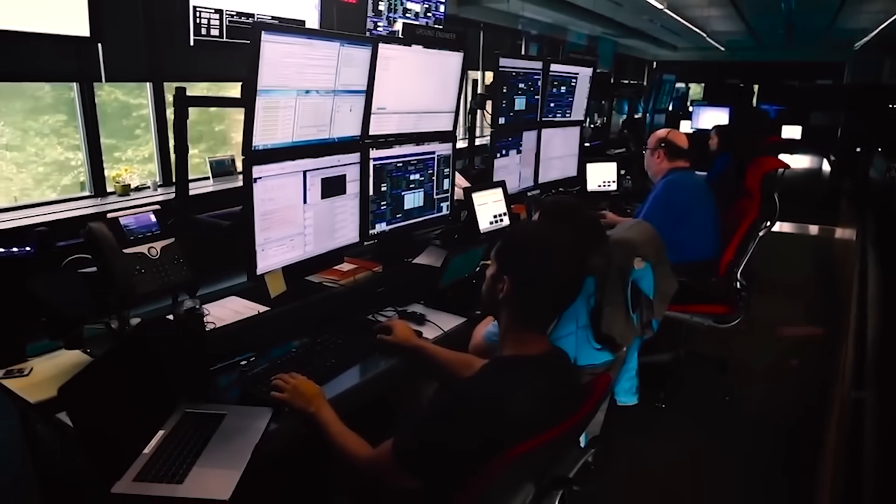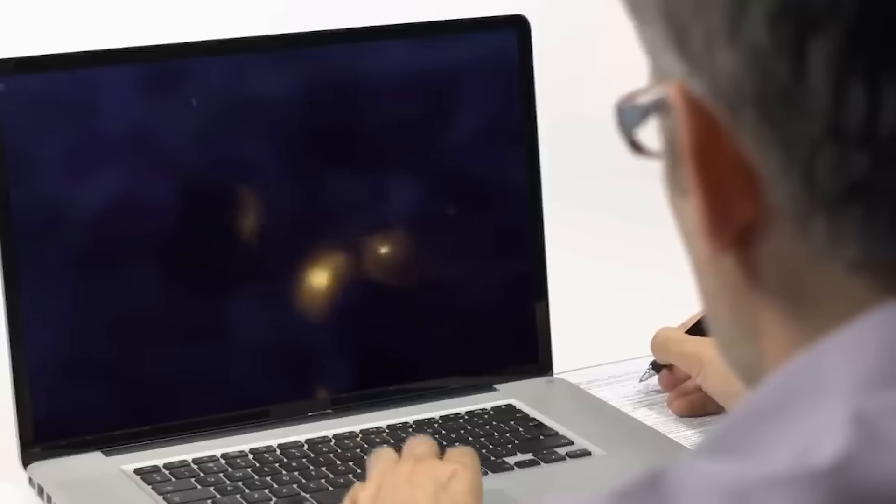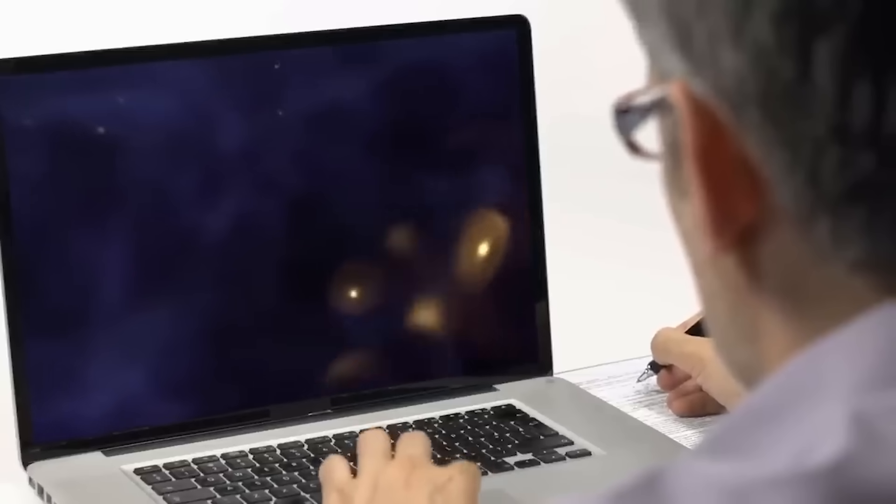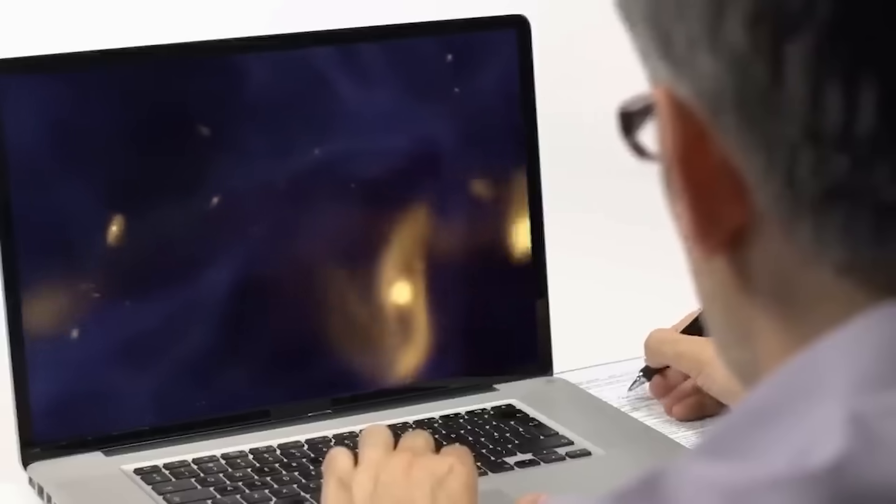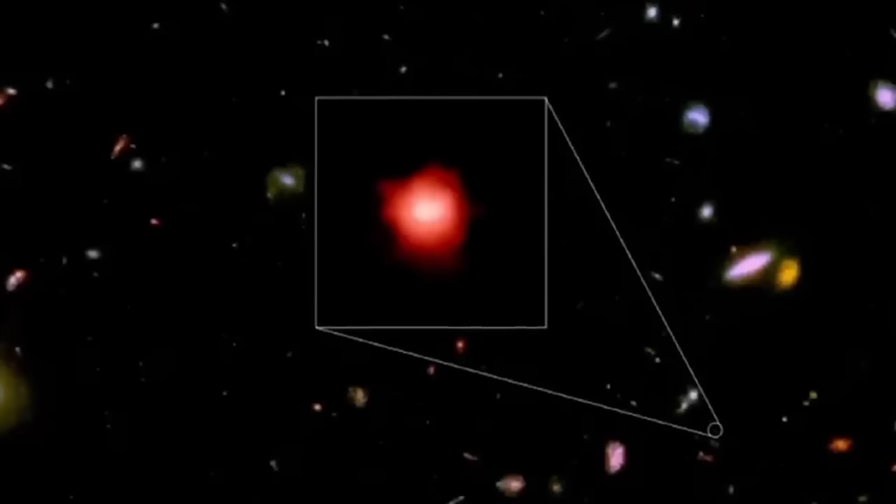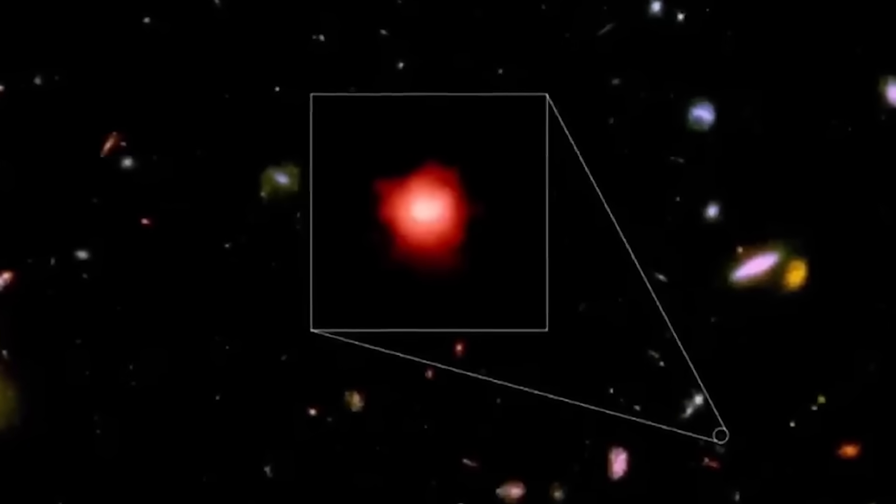While the new discovery took the whole scientific community by storm, another primordial galaxy showed up, this time existing only 390 million years after the Big Bang. So what did astronomers find in the latest Webb telescope image?